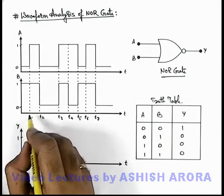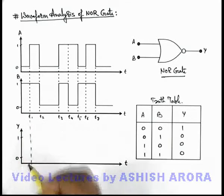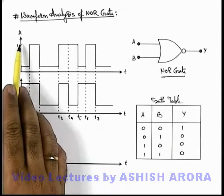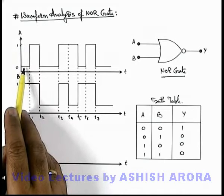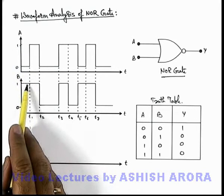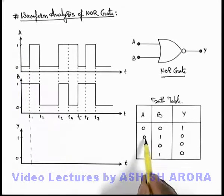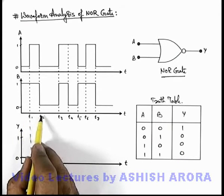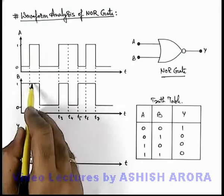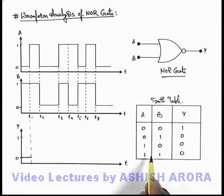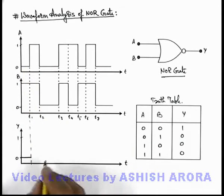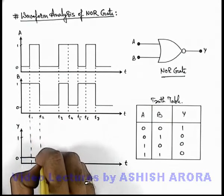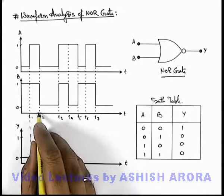From t=0 to t1, the state of signal A is 0 and B is 1, so for input (0,1) the output Y is 0 — it'll be at low state. From t1 to t2, both signals are in the 1 state, so the output Y will continue to be in low state up to t2.